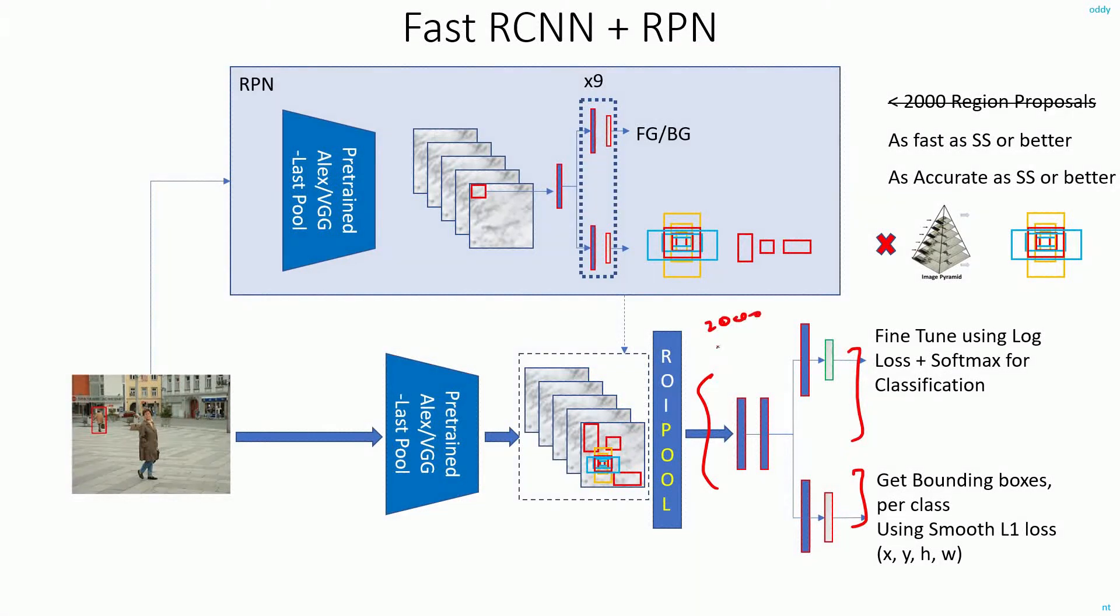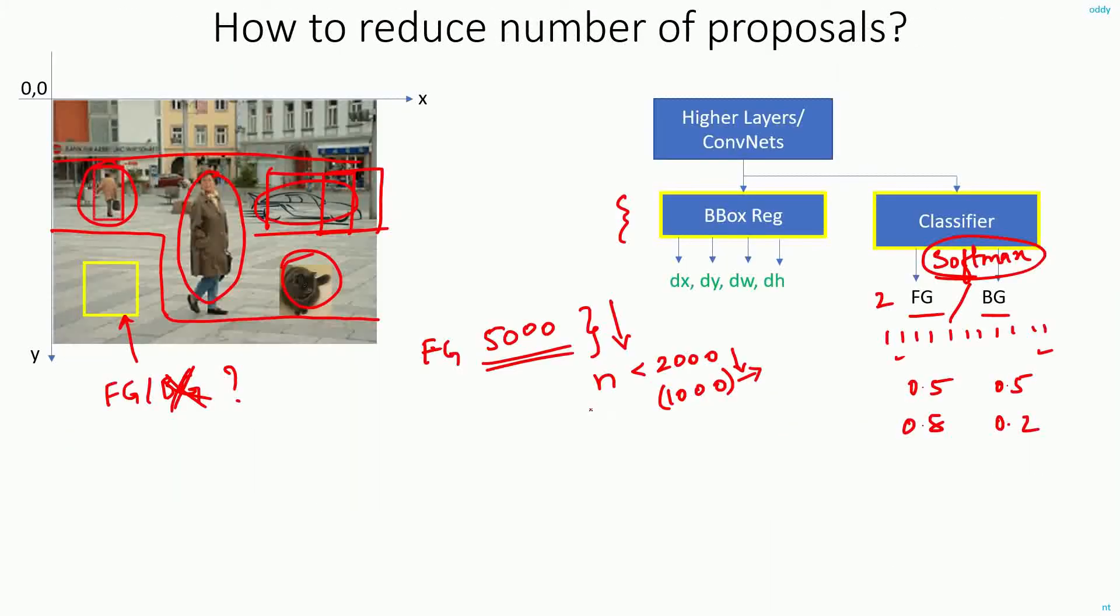Instead of 2,000, if I have just finite proposals, the amount of processing I'll be doing in this part of the network will be very less. That's the advantage in using the softmax as the classifier, which will not only give me the label but will also give me the score. This way I can try out with different values of n and see which is the best compromise between speed and accuracy.